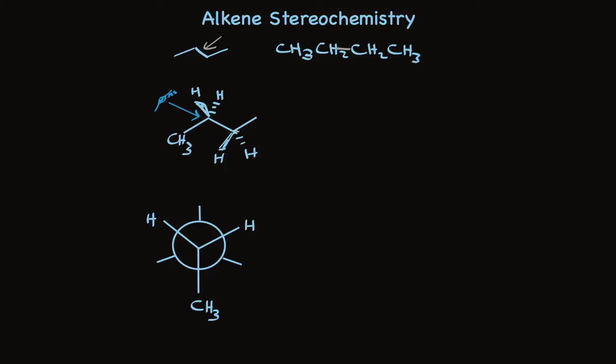For the back carbon, we have a methyl group sticking straight up according to our eye, and the other two things are hydrogens sticking down back to the left, and down forward to the right. Now I'm being careful about this because this is a specific conformation, and I want to make the point that this conformation is only one of many — very many — as the rotation about these carbon-carbon bonds lets the orientations of the methyl groups change with respect to each other.